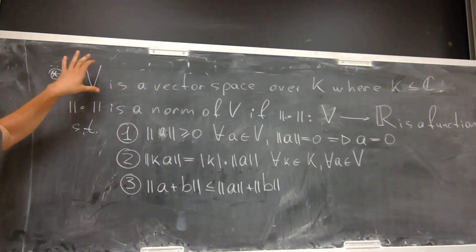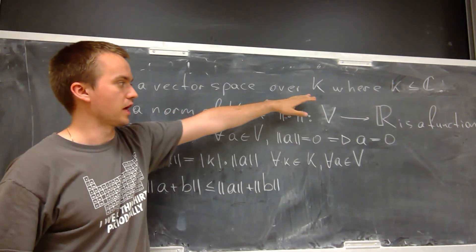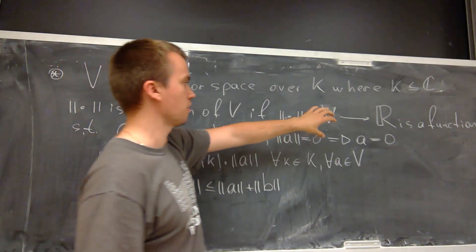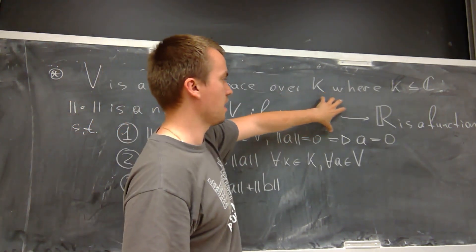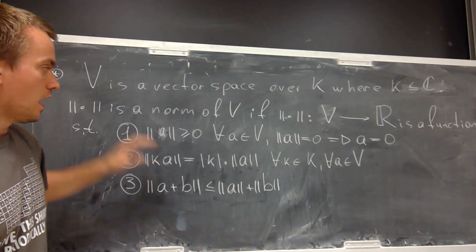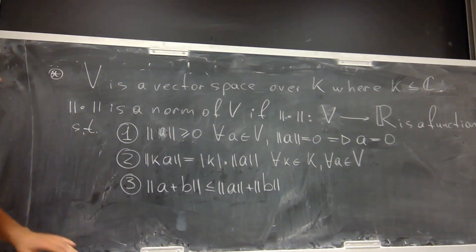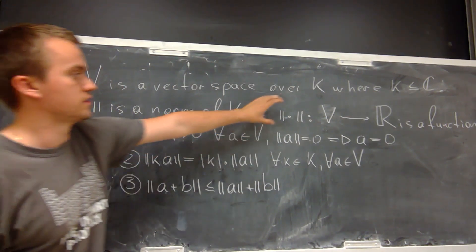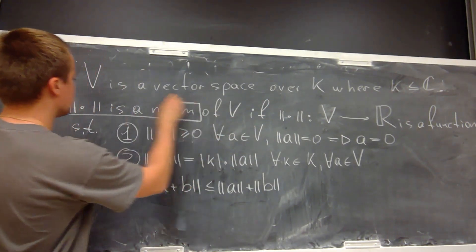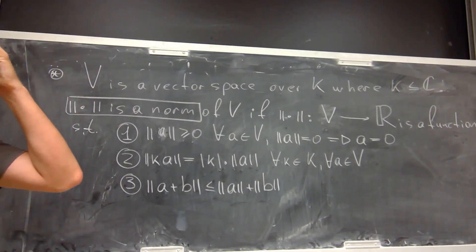So if we're given a vector space over K and a function mapping elements to R, and this function satisfies all three of these properties, it means this function is going to be a norm.